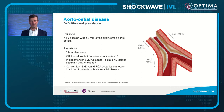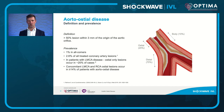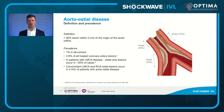An aorto-osteal lesion lies within three millimeters of the ostium of the aortic orifice and has greater than 50% stenosis. It's seen in around 1% of all patients coming for coronary angiography, and almost 3% of all lesions treated. We see it in left main stem disease in around 20% of patients as osteal lesions within that left main cohort, and in both left main and right coronary osteal lesions in around 15% of patients with concomitant disease.